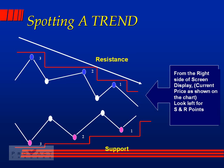Those tops are called resistances. In an uptrend it's the opposite: the low of number one is higher than the low of number two, and the low of number two is higher than the low of number three. Those are called support points, and that's what actually creates trends — support and resistance.